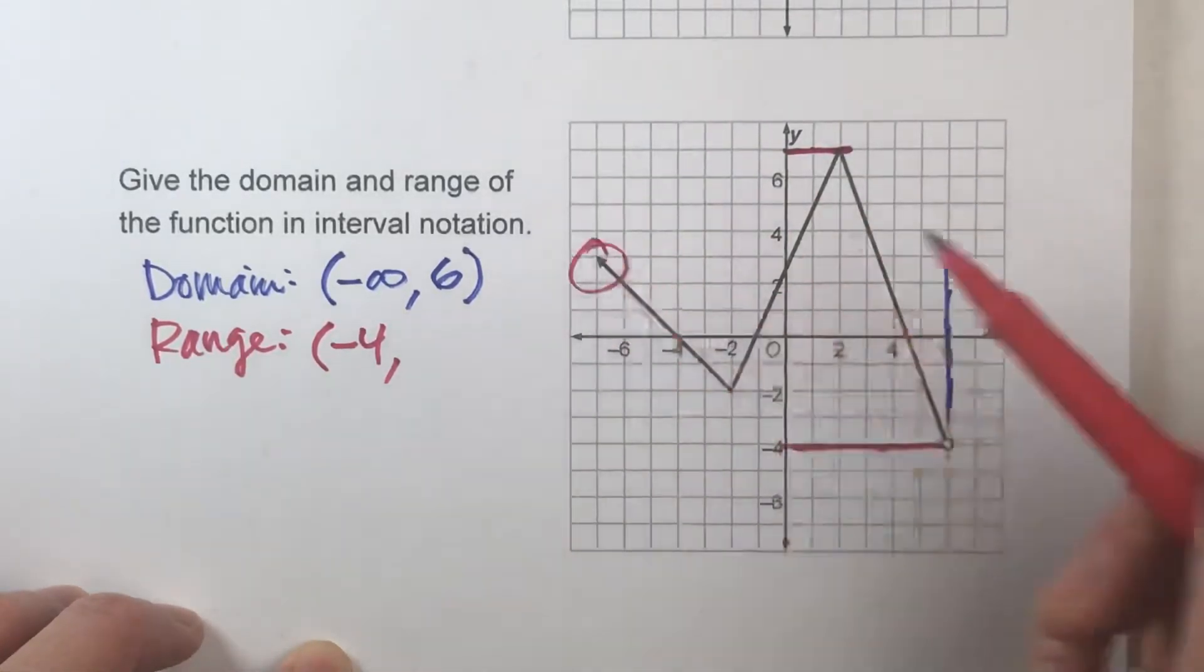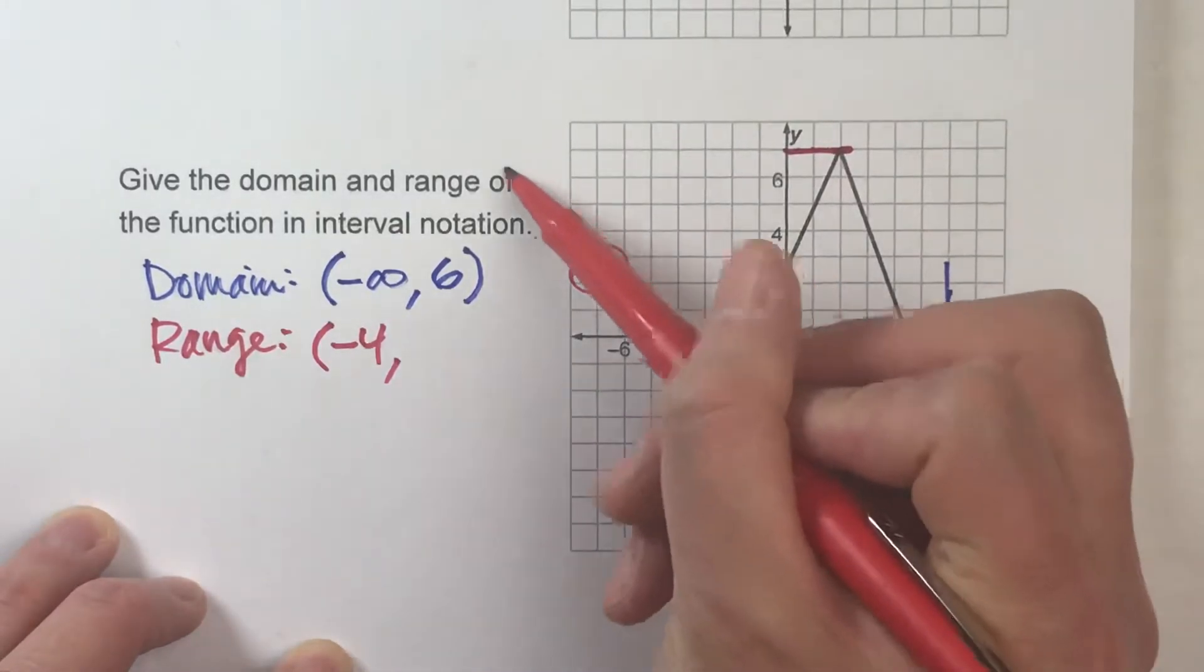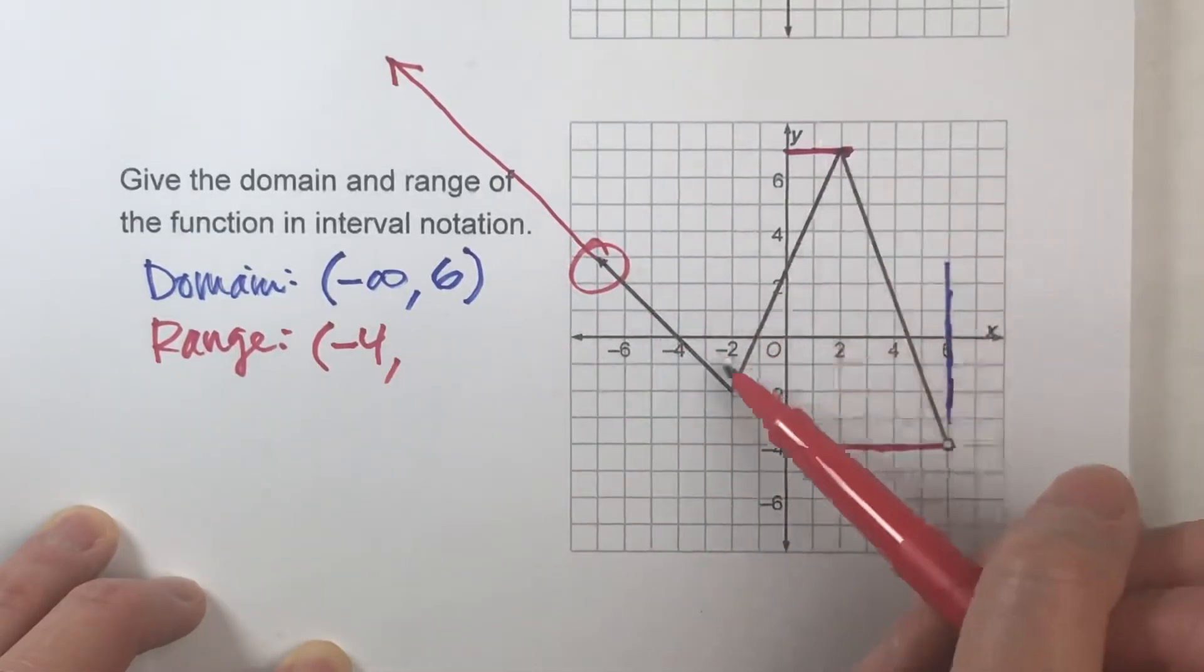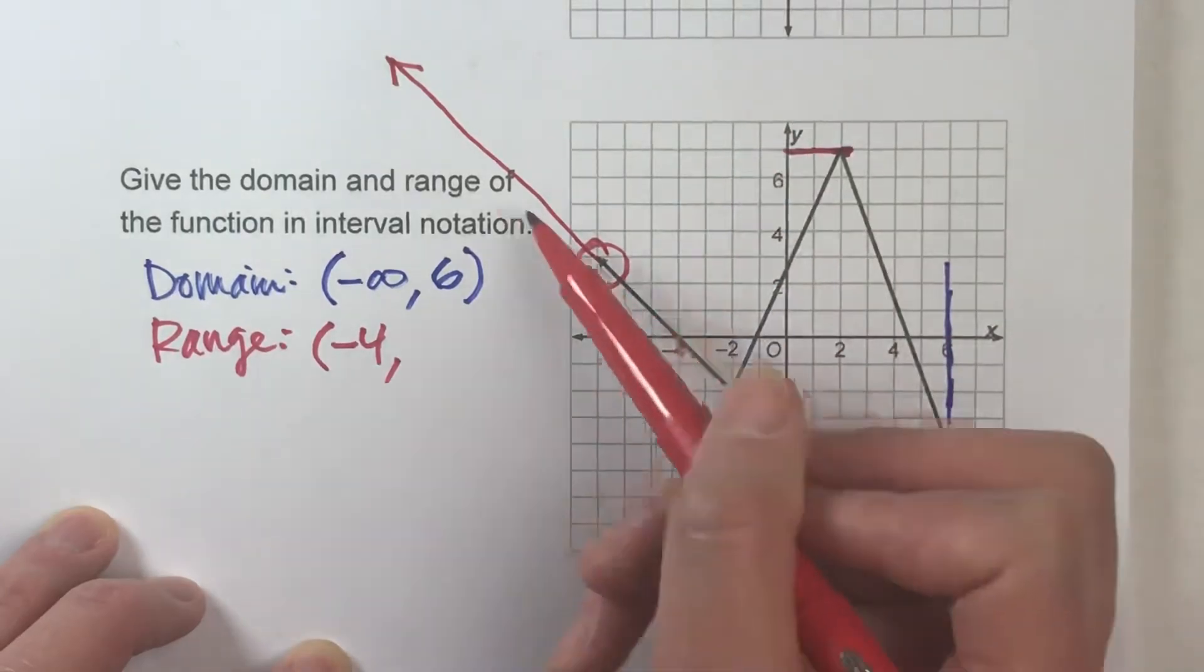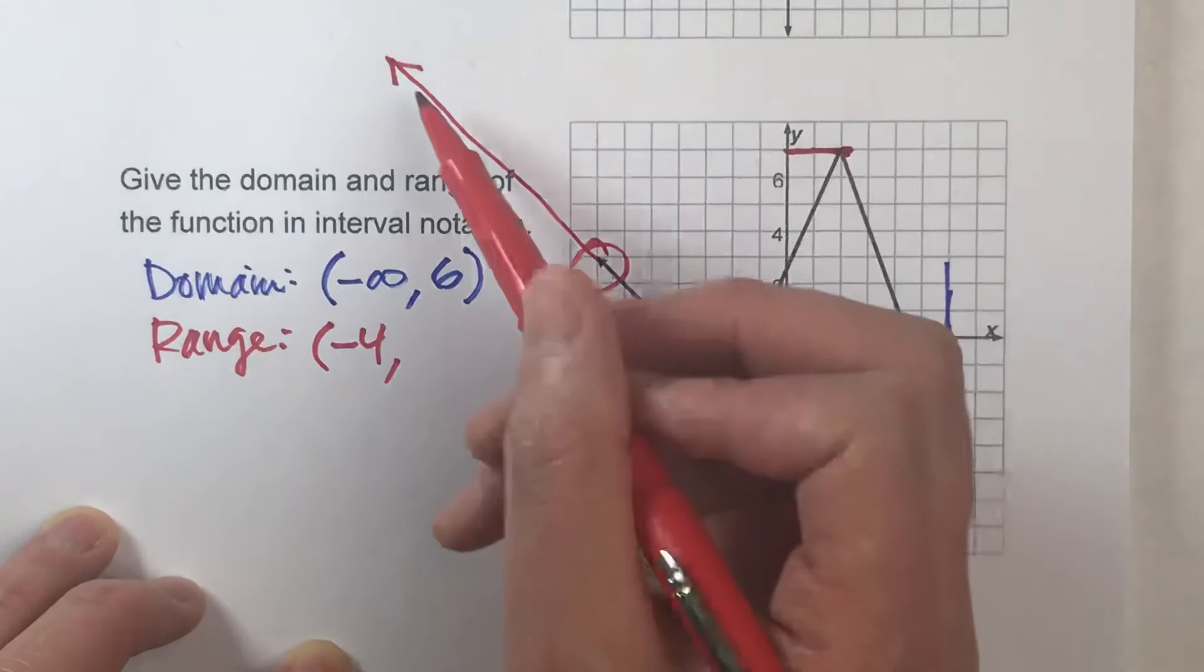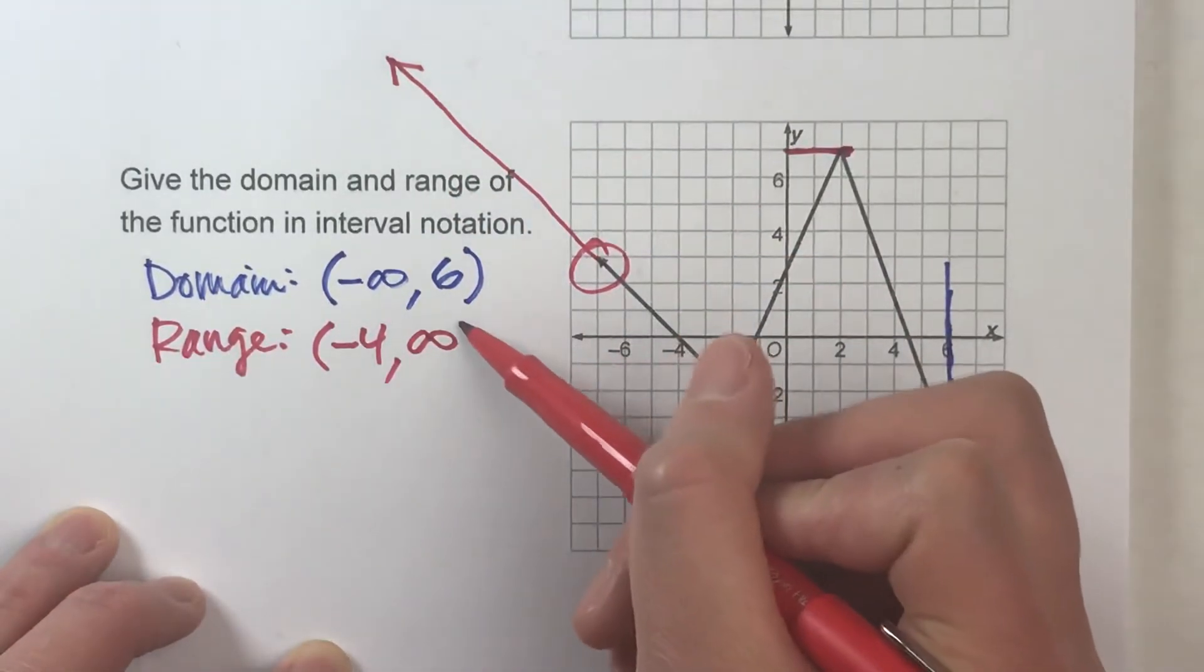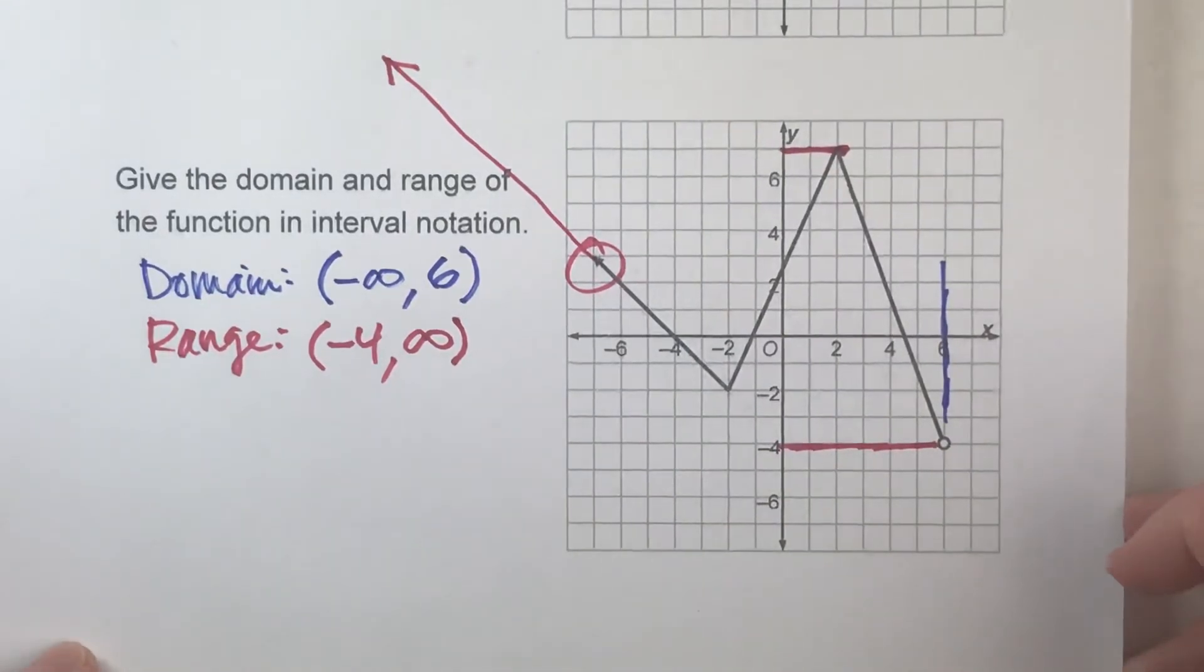This arrow shows that it's going to keep going forever, including past this. Even though it doesn't seem like it shows that because it gets stopped off by the end of the graph, it does keep going forever. So the highest y value is infinity. Can it be infinity? Of course not. No number can actually be infinity, so we use the parentheses.